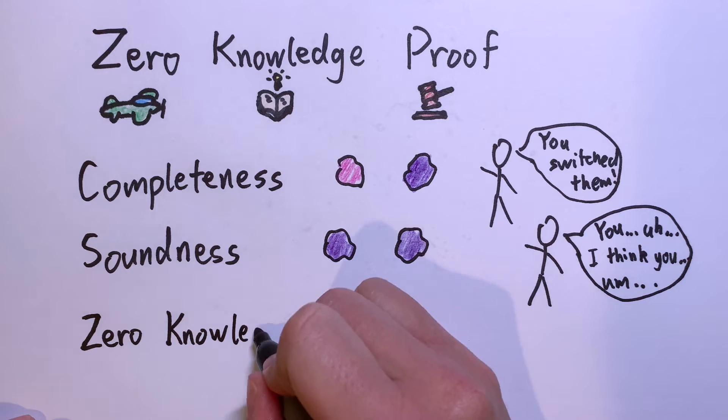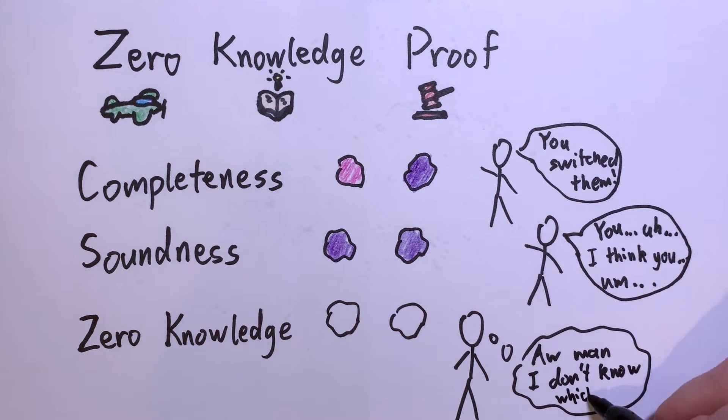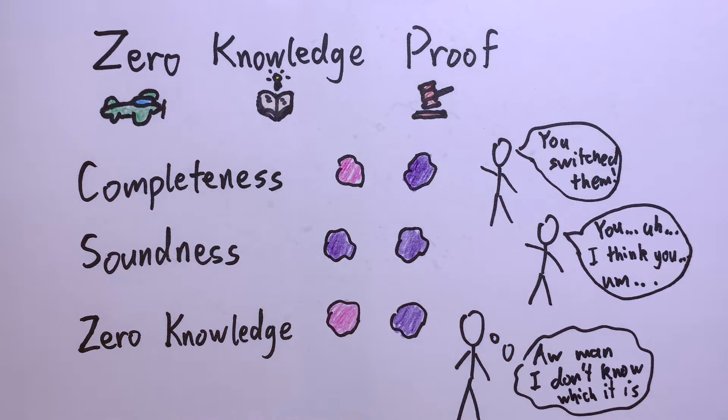Zero knowledge. If the prover is honest, the verifier would not learn any new information from this protocol. Anakin still has no idea which flower is the magic one.